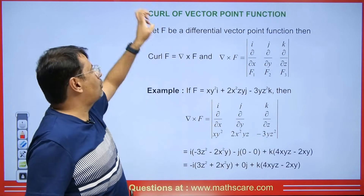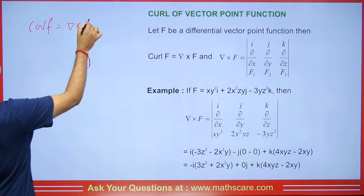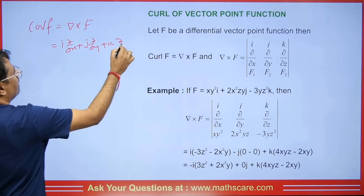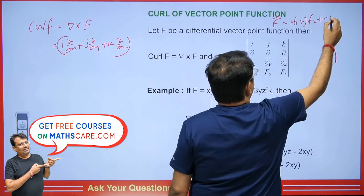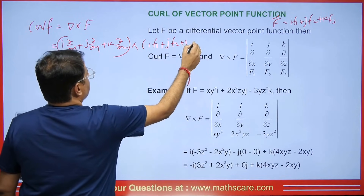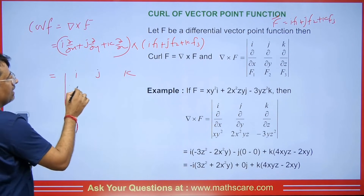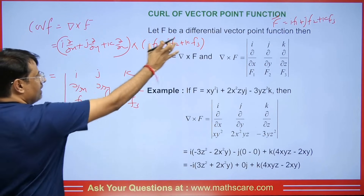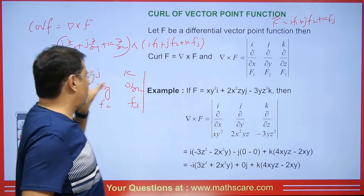Now let's talk about how to calculate curl. If we are given any vector point function and asked to calculate the value of curl — curl means del×f. We write it as a determinant with i, j, k in the first row; ∂/∂x, ∂/∂y, ∂/∂z in the second row; and f1, f2, f3 as the coefficients of i, j, k in the third row. The value of that determinant is the curl of f.